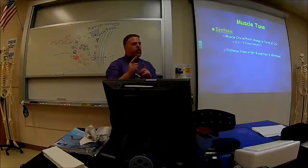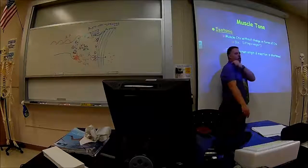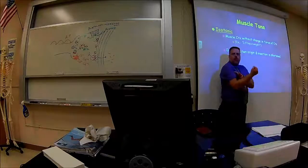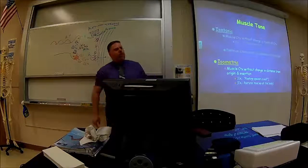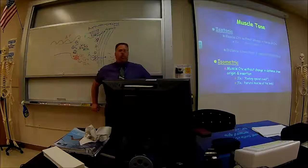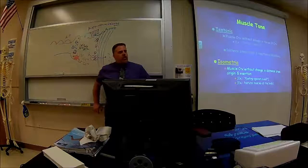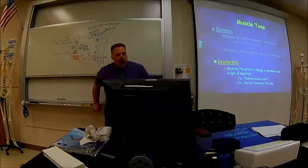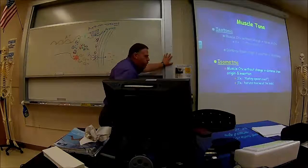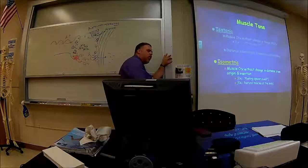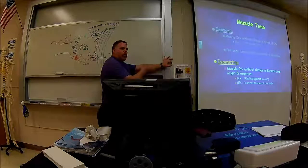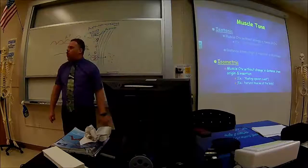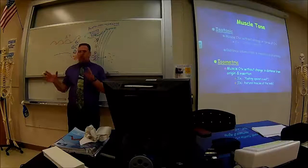The origin is the fixed end and the insertion is the moving end, and the distance between these two points gets closer together in isotonic contraction. Isometric is different — iso means without change, metric refers to distance. In isometric contraction, the distance between the two ends of the muscle does not change, but the tone does change. A good example is pushing against a wall — you're trying to push through it, so your tone gets stronger and stronger, but the muscle ends don't move.